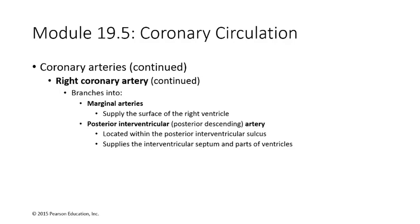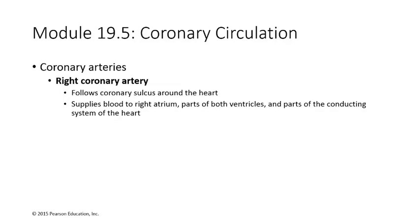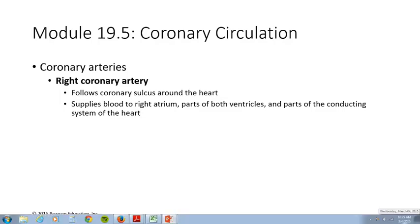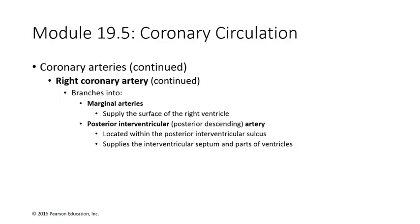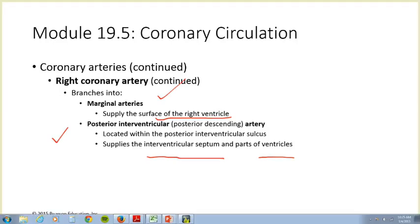When reviewing the coronary circulation, in the past I only referred to the right and left coronary arteries. Those coronary arteries, as all arteries do, are going to continue to branch. You will want to look at where the right coronary artery goes — it branches into the marginal arteries, which supply the surface of the right ventricle, and the posterior interventricular artery, which goes to the interventricular septum and to the ventricles.